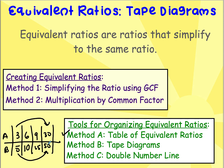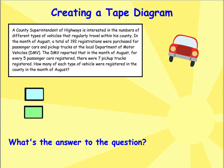Today we're going to learn a second method — tape diagrams — and a third method called a double number line. Let's first look at a tape diagram. For a physical model we might use post-it notes or draw rectangles. Let's read our problem.